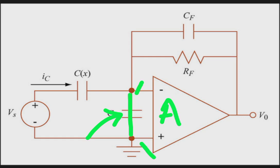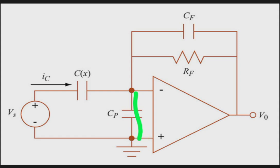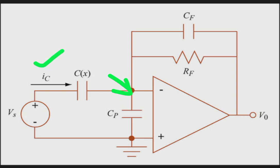This concept of virtual short applies under the assumption that the gain of the amplifier is extremely high — practically 10⁵ to 10⁷ for real op-amps, and ideally infinite. This simplifies the analysis: with a virtual short, there is ground potential at the negative pin as well. We then apply KCL — Kirchhoff's current law — at this node, which states that the input current IC equals the feedback current IF.